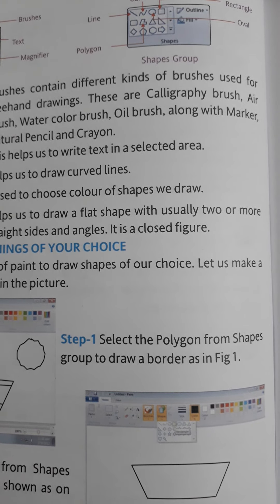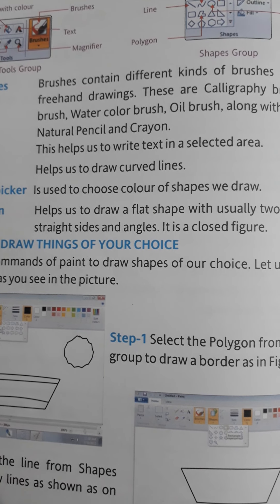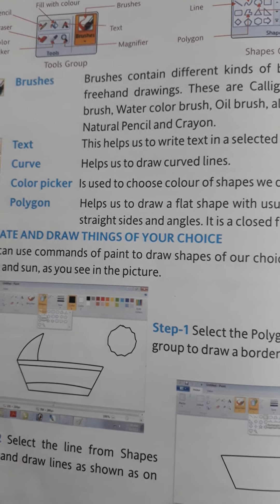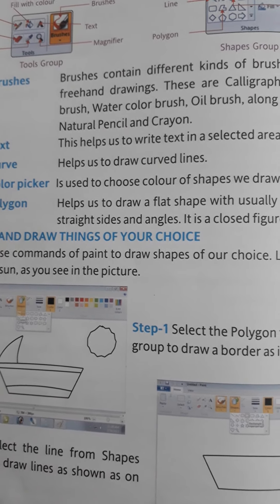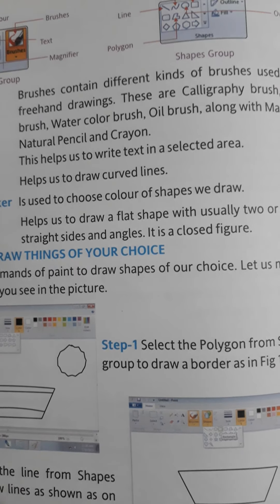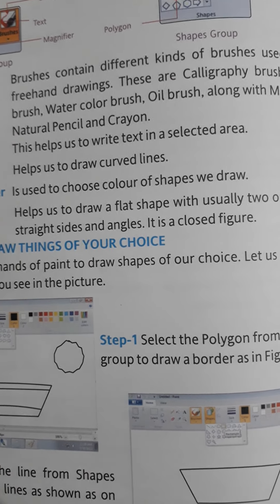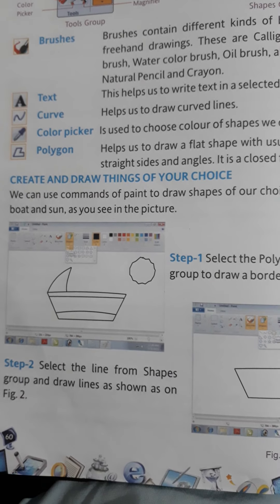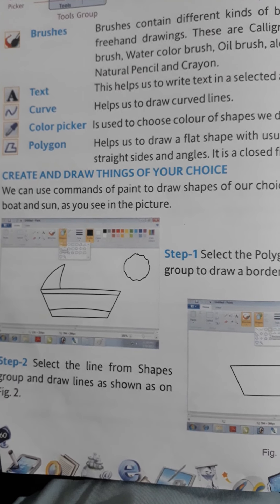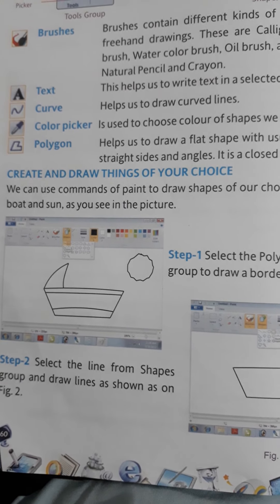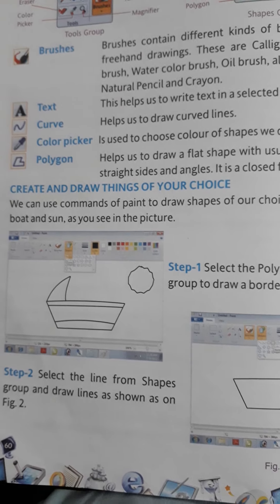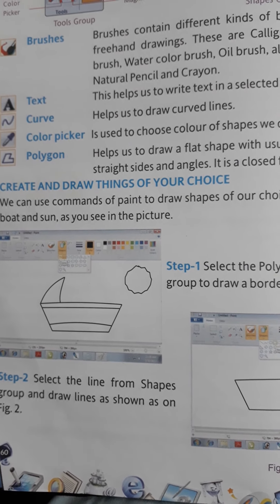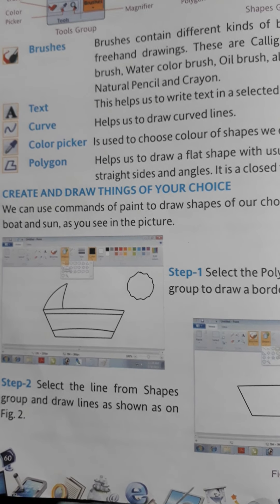The Polygon tool draws a shape with usually two or more straight sides and angles — it is a closed figure with different sides and angles. Next, we will see how to draw in the Paint program using different tools and shapes.